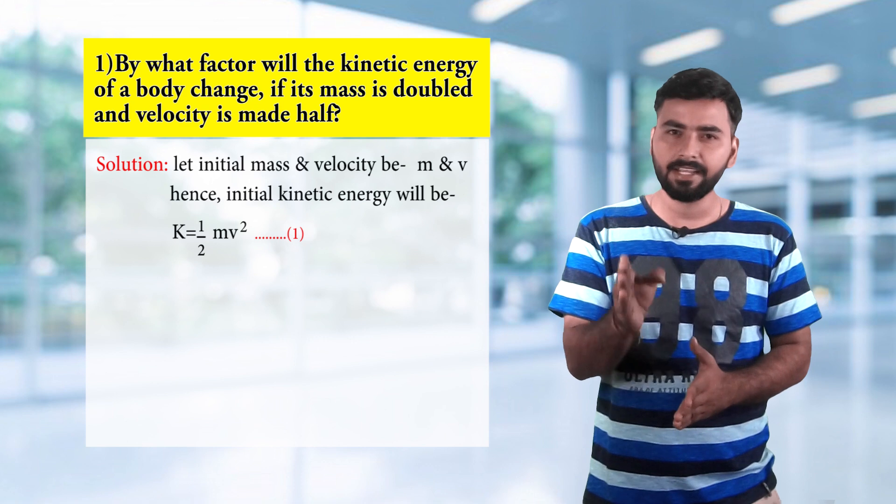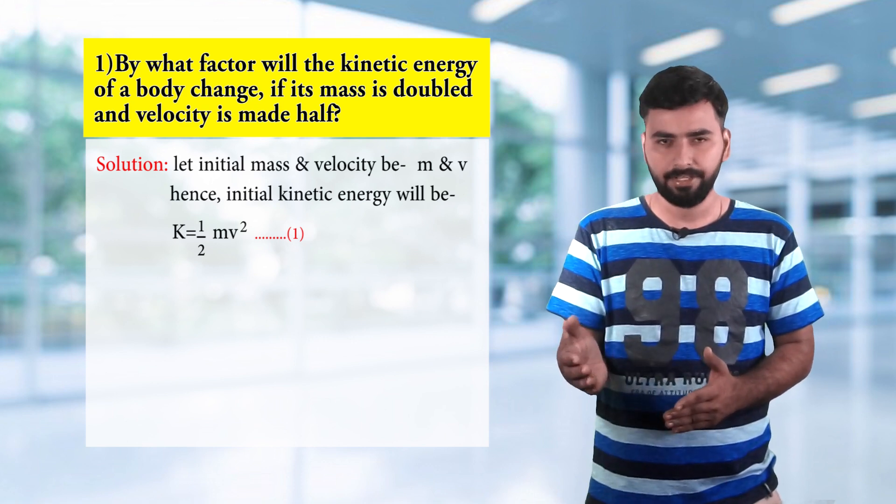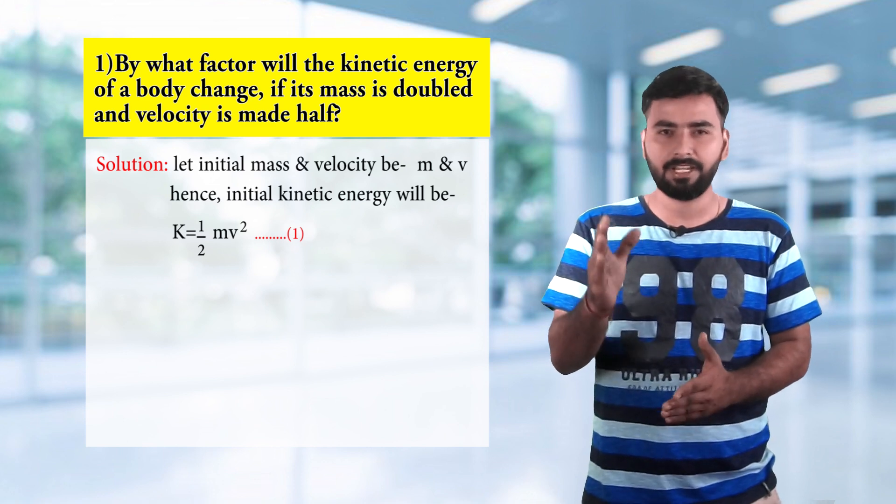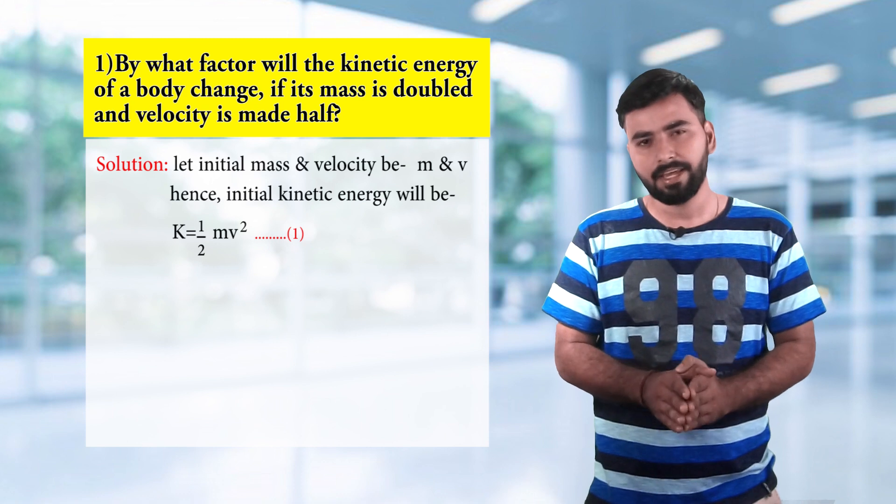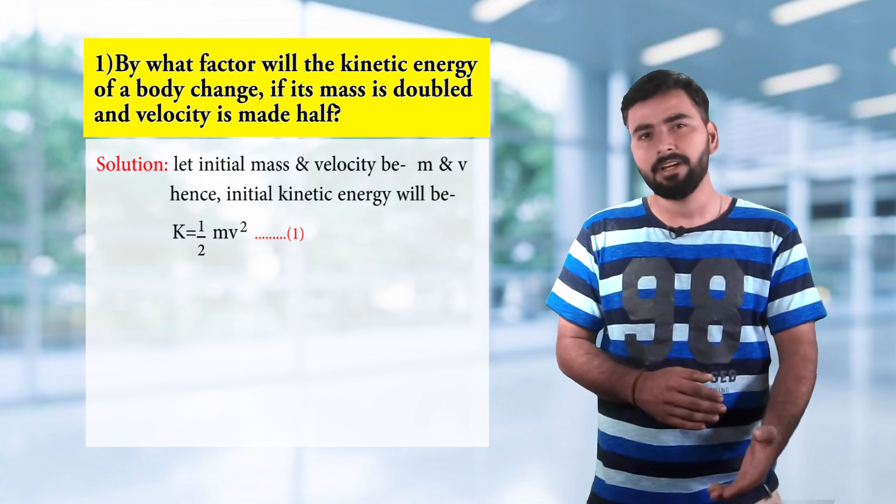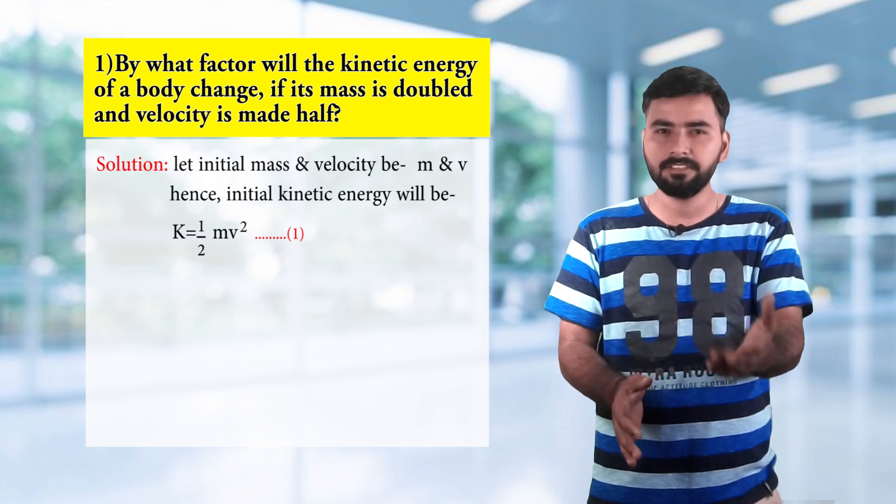Initial kinetic energy K will be half mv square. This is equation number 1, the initial kinetic energy. Now what is said here? If the mass is doubled and velocity is made half, what difference will occur in kinetic energy?